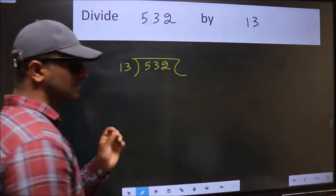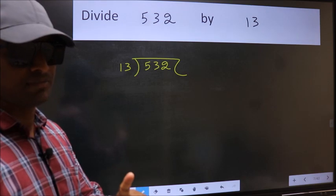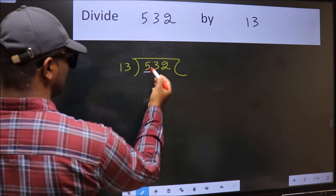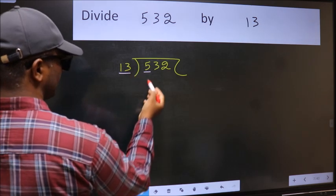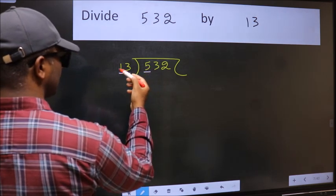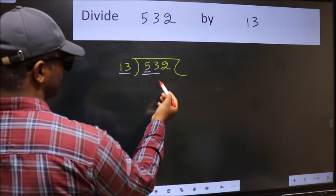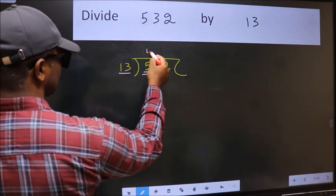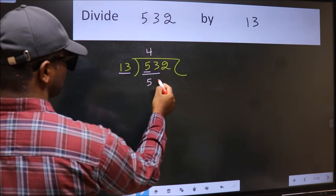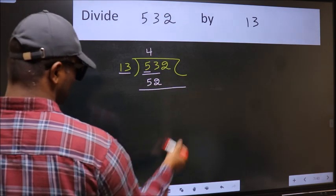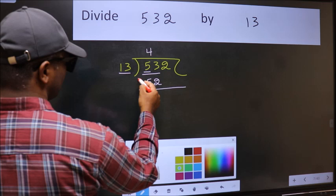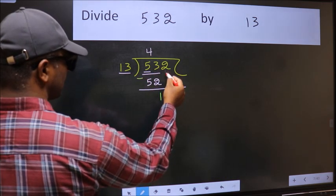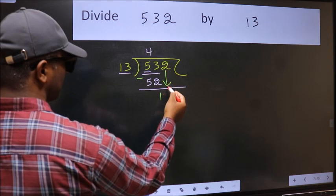This is your step 1. Next, here we have 5 and here 13. 5 is smaller than 13, so we should take two numbers: 53. A number close to 53 in the 13 table is 13 fours 52. Now we should subtract 53 minus 52, which is 1. After this, bring down the beside number, so 2 down.